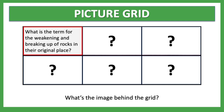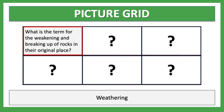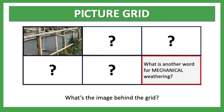Question one: what is a term for the weakening and breaking up of rocks in their original place? It is weathering — the idea of weakening and breaking up of rocks in situ. Question two: what is another word for mechanical weathering? It is also known as physical weathering. You've got things like onion skin weathering and freeze-thaw weathering as types of mechanical weathering.